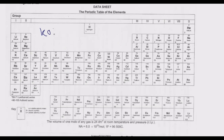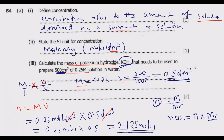From the periodic table: potassium (K) = 39, oxygen (O) = 16, hydrogen (H) = 1. So RMM of KOH = 39 + 16 + 1 = 56 g/mol. Substituting: mass = 0.125 × 56 = 7 grams. So 7 grams is the mass of KOH needed to prepare this solution in water.